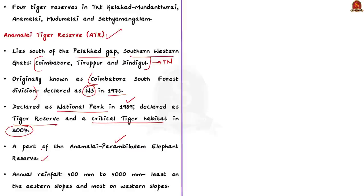The Anamalai Tiger Reserve receives 500 mm to 5000 mm annual rainfall. The western slopes of the Tiger Reserve receive more rainfall, whereas the eastern slopes receive less rainfall.